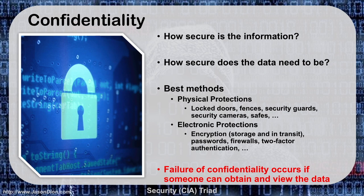If you have a failure of confidentiality, that means someone can obtain and view the data you have. If they steal an electronic file that is encrypted but don't have the decryption key, so they can't read it, that is not a failure of confidentiality. It's another failure, but not confidentiality. If they can obtain it and view the data, that's when confidentiality has been breached.